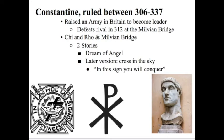Next we have Constantine. Constantine comes after Diocletian and wants to become leader. He raises an army in Britain, where he was stationed, and defeats his rival Maxentius in the year 312 at the Milvian Bridge. The Milvian Bridge becomes extremely important for pretty much the rest of Western civilization — we're even feeling its effects today. The Milvian Bridge is an important route on the Tiber River, which is a central body of water to Rome.